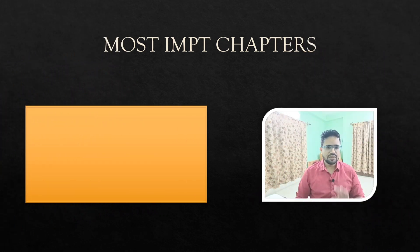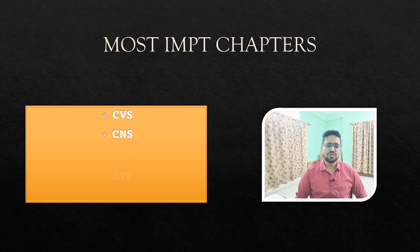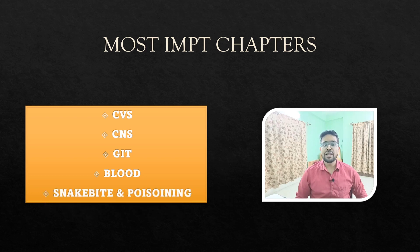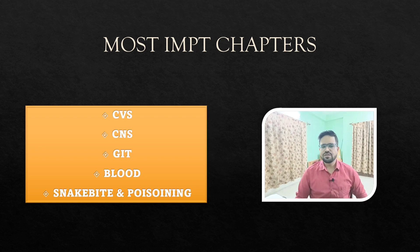Now I'll tell you the most important chapters if you are starting your preparation. Read these chapters first: CVS is the most important, then CNS. They are asking more questions from CVS, CNS, GIT, and Blood. Do not forget snake bite and poisoning, because this is a favorite topic for UPSC — they ask about snake bite and different types of poisoning every year. Start preparation with these five chapters, then move to nephrology and respiratory system.